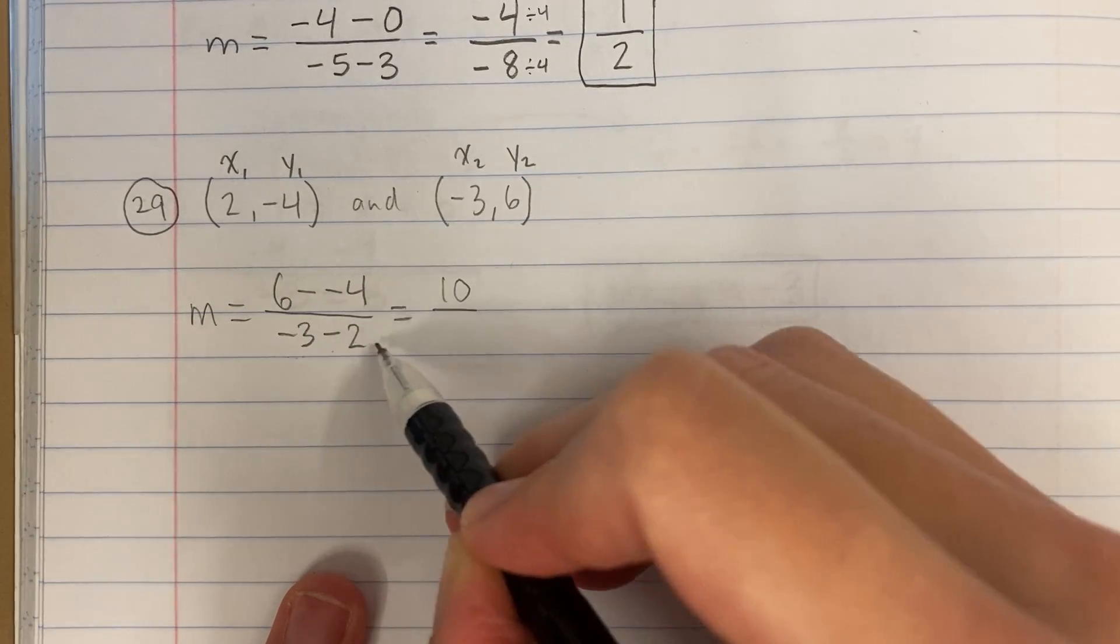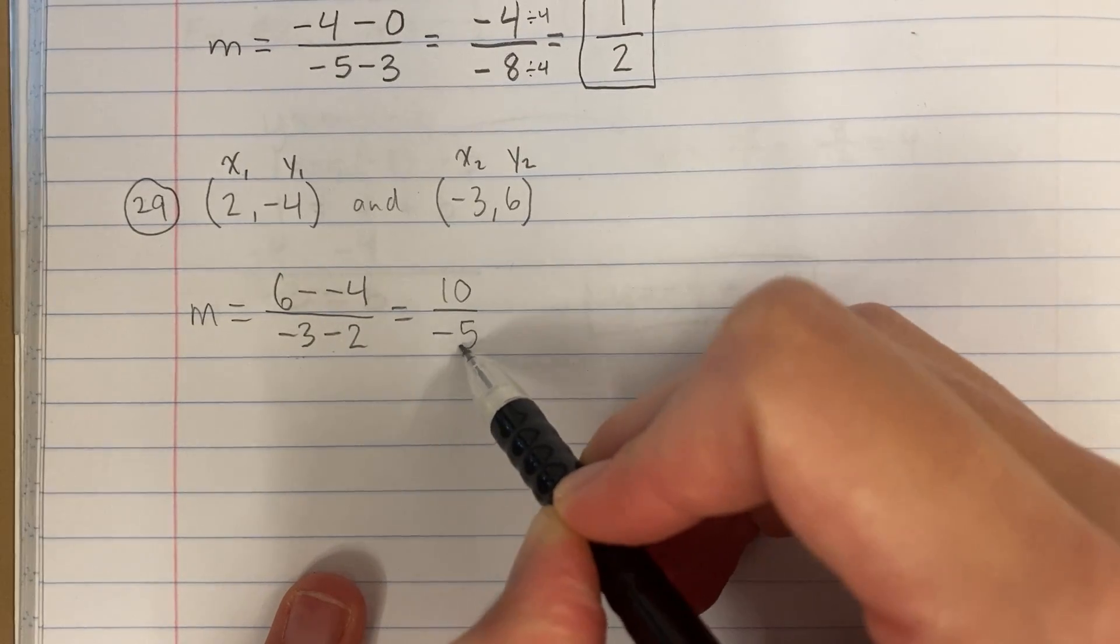This is negative 3 minus 2. Three negatives, two more negatives, that's negative 5.